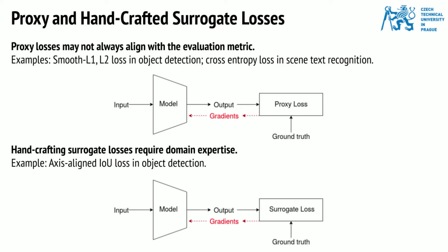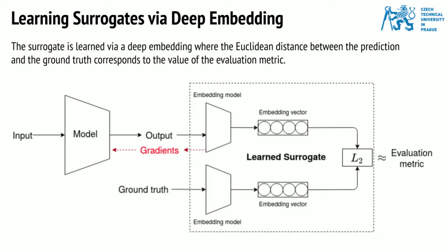In the past, task-specific handcrafted surrogate losses have been proposed, but designing these functions requires domain expertise. To address these issues, we propose to learn the surrogate. A surrogate is learned via a deep embedding where the Euclidean distance between the prediction and the ground truth corresponds to the value of the evaluation metric.